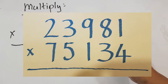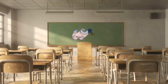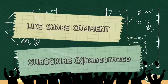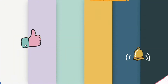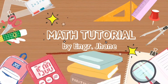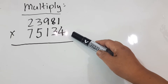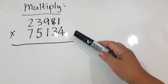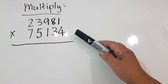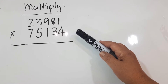Hello Genius! Today's RVG is about multiplication. We have to multiply a 5-digit number by a 5-digit number using a quicker method compared to the usual way we learned from school.